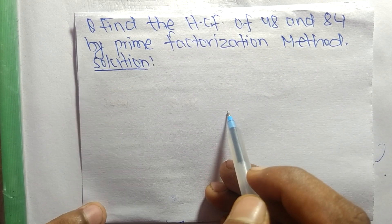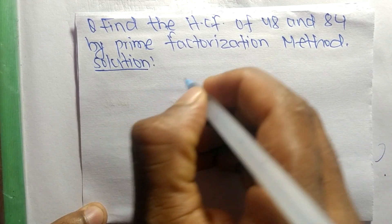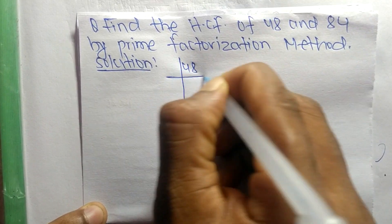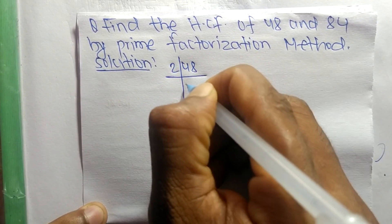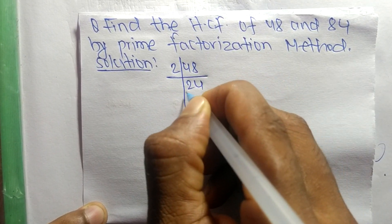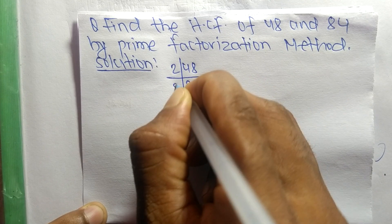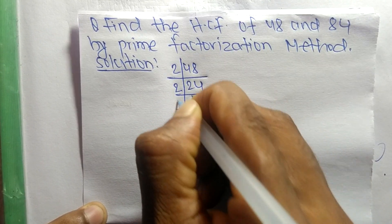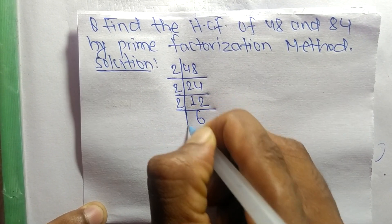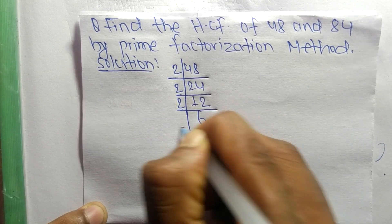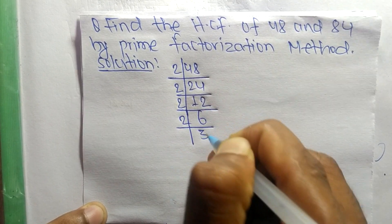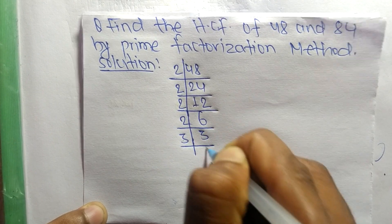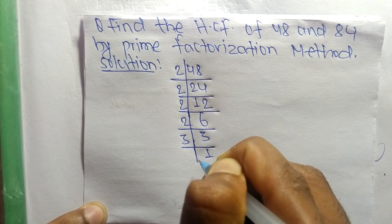First, we find out the prime factors of 48. It is 2 times 24 equals 48, 2 times 12 equals 24, 2 times 6 equals 12, 2 times 3 equals 6, and 3 times 1 equals 3.